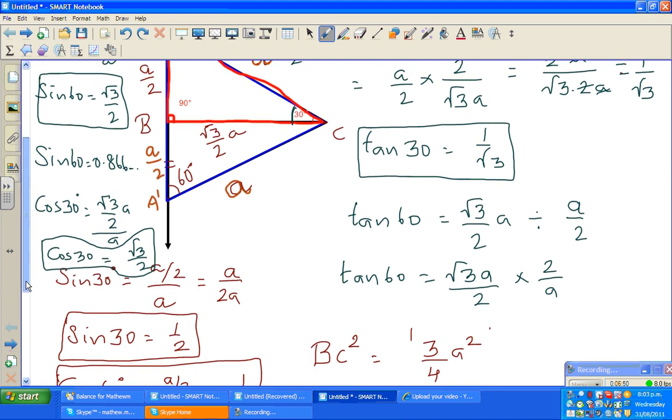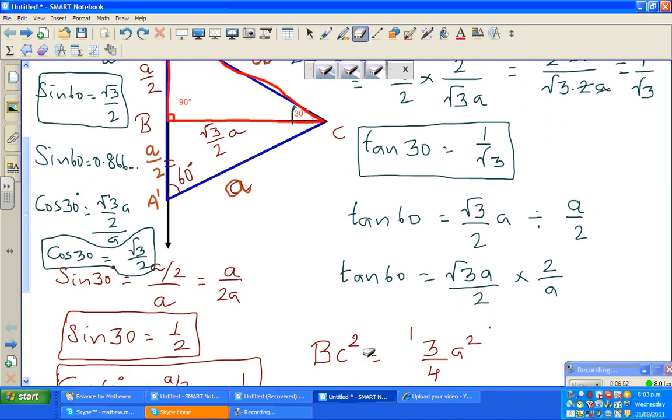So tan 60° will become √3A/2 times 2/A. Whenever you change the division to multiplication, you swap the number over. So this 2 and this 2 will get cancelled and this and this will get cancelled. So tan 60° is √3.